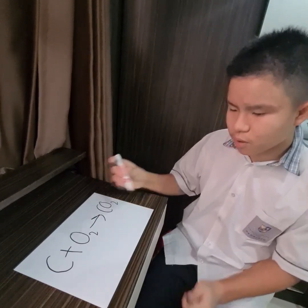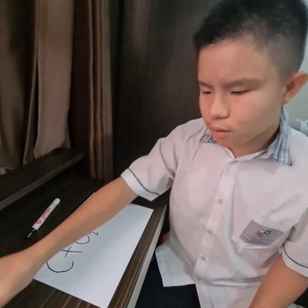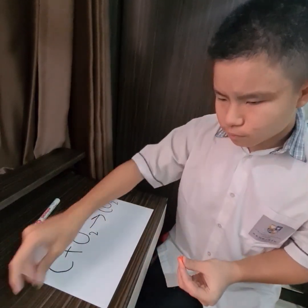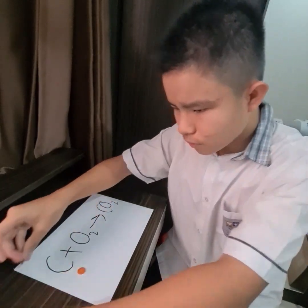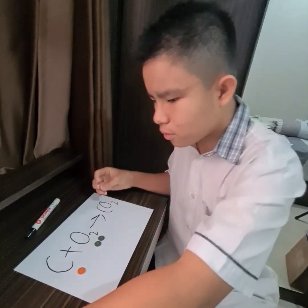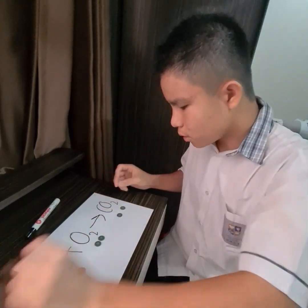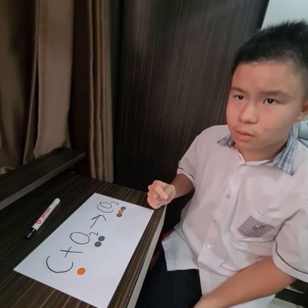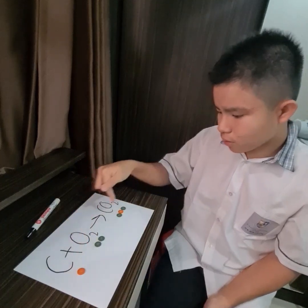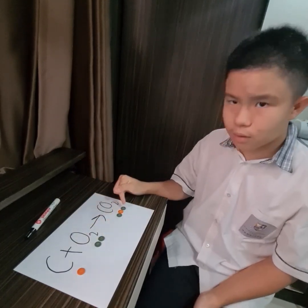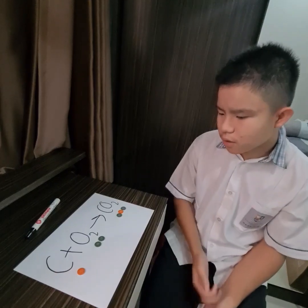Next I will use buttons to explain about this. We use an orange button to represent C or carbon, and we use green buttons to represent O, which is oxygen. So we have two green buttons for O2, and for CO2 we have two green buttons and one orange button in the middle. So there is one orange button on the left and one on the right. This is already a balanced chemical reaction.